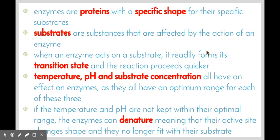Enzymes are proteins with a specific shape for their specific substrate. Substrates are the substances that are affected by the action of an enzyme — basically the reactants of the chemical reaction. The enzyme acts on those and therefore brings about the chemical reaction. When an enzyme acts on a substrate, it readily forms its transition state and the reaction proceeds quicker.